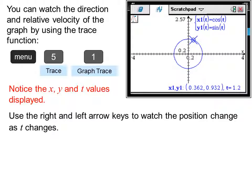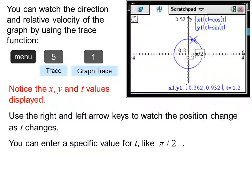We use the right and left arrow keys to watch the position change as t changes. So now we have new x, y, and t values as we've moved around the circle part of the way. You can enter a specific value for t like pi over two, which we just did there.